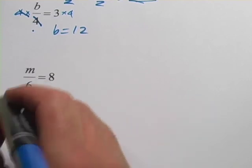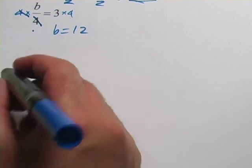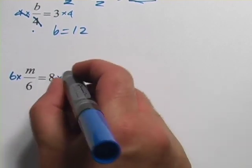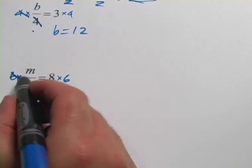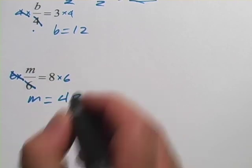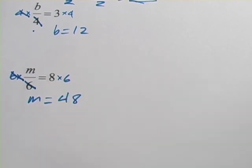If you want to do this the algebra way, you say I've got m divided by 6 so I need to multiply it by 6 to make that 6 disappear. But I have to do that to both sides. The 6's cancel. I get m equals 8 times 6 or 48. So those are some missing number problems in division.